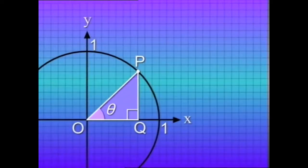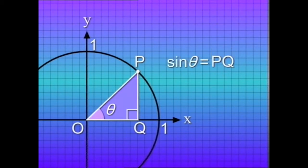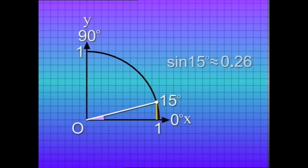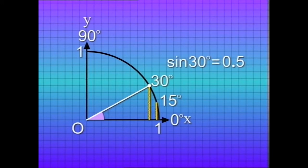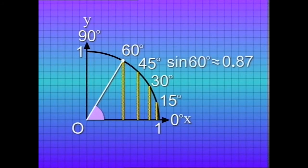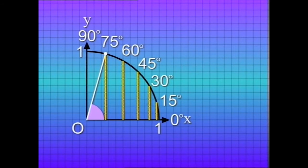From P we drop a vertical line PQ to the x-axis, giving us right angle triangle OPQ. In this triangle, sine theta equals the ratio of the opposite side to the hypotenuse, which is PQ divided by one, equals PQ. That is to say, sine theta equals the y-coordinate of point P. If theta is 15°, sine 15° ≈ 0.26. If 30°, sine 30° ≈ 0.5. If 45°, sine 45° ≈ 0.71. If 60°, sine 60° ≈ 0.87. If 75°, sine 75° ≈ 0.97.